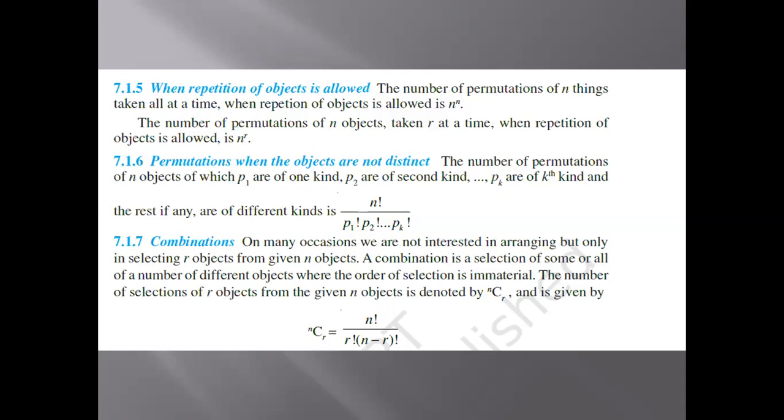So the number of permutations of n objects taken r at a time when repetition is allowed is n to the power r.